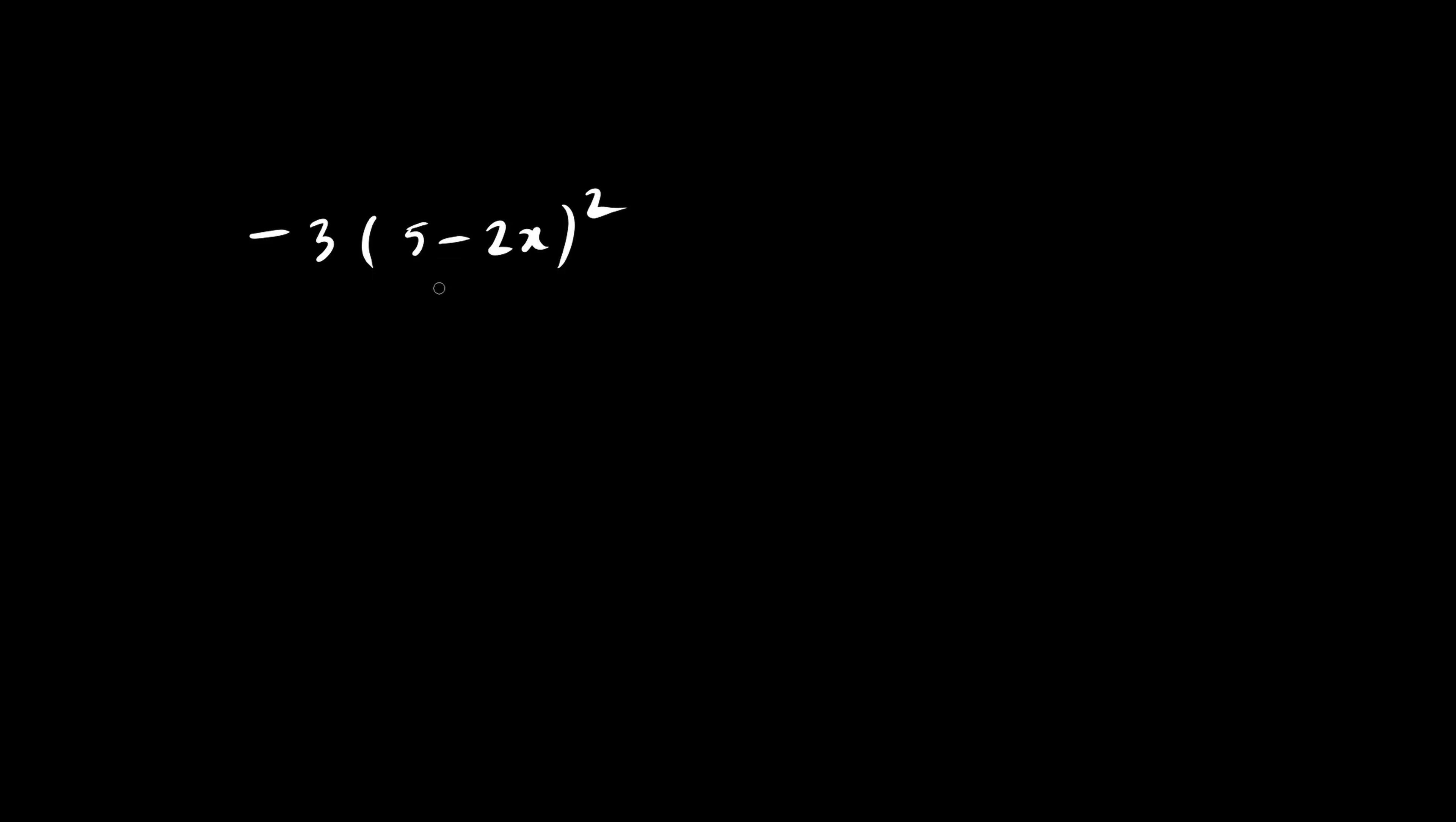We have negative 3 times a binomial squared. Let's first begin by expanding and simplifying this binomial. The negative 3 we leave alone, and we have a large bracket here. Let's do this the fast way.